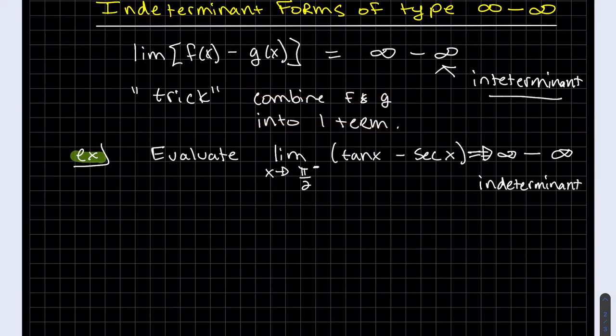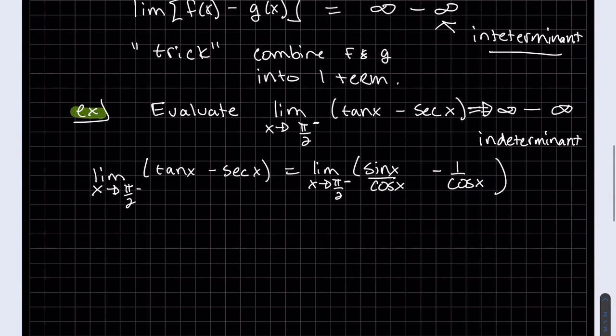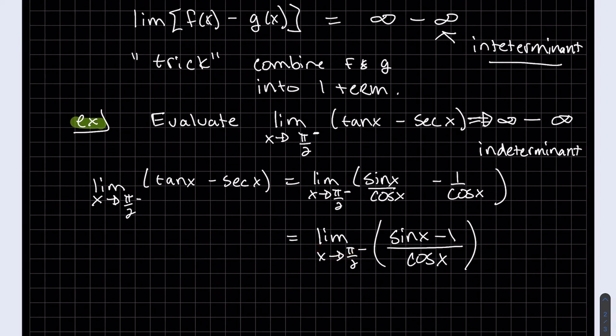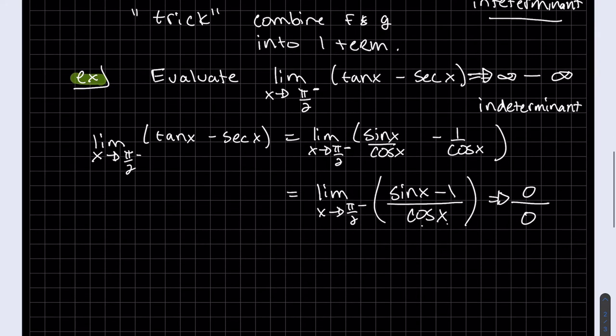How would I do that? I'd have to make them a fraction. So we'll convert those, putting them in terms of sine and cosine. It looks like we already have a common denominator, so we can just combine them. And now when we plug in this, sine of pi over 2 is 1, so we get 0. Cosine of pi over 2 is 0. This is still indeterminate, but now we have this form where we can apply L'Hopital's rule.